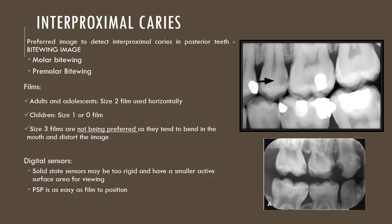Let's look at interproximal caries, also called proximal caries. The preferred image to detect interproximal caries in the posterior teeth especially is a bitwing image. We have molar bitwings and premolar bitwings depending on the area covered. Generally, the film used in adults and adolescents is a size 2 film placed horizontally. In children, a size 1 or size 0 film is used. The size 3 films, ideally recommended for bitwing radiography, are no longer preferred as they tend to bend in the mouth and distort the image.